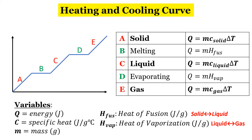I know this looks like a lot. Let me try to break it down so it's not as overwhelming. First of all, you're familiar with the equation that we're going to be using for many of these. The energy is equal to mc delta T. Q is going to be the energy — you're familiar with this equation, so hopefully this part is just review.